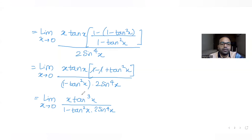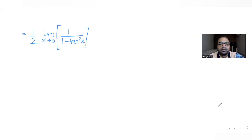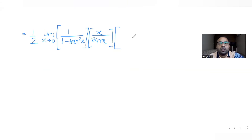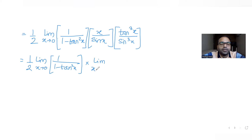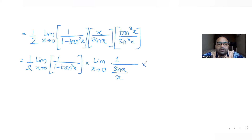Then I can split x with one factor of sin(x), so it becomes x/sin(x). Using one sin(x) this way, three factors of sin(x) are still left in the denominator from sin⁴(x). And tan³(x) is also present. So applying limits separately: I write 1/(1 minus tan²(x)), multiplied by limit x→0 of x/sin(x), which equals 1/(sin(x)/x).